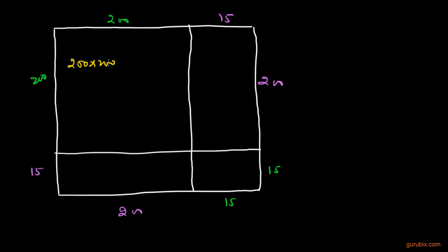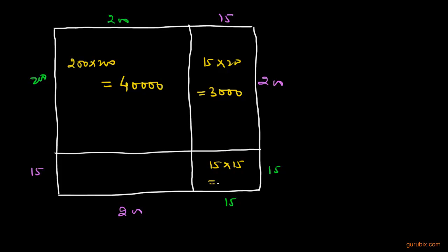Now we shall find the area of all 4 parts of the square. The area of the first part will be 200 into 200, which means 40,000. The area of the second part will be 15 into 200, which means 3,000. The area of the third part will be 15 into 15, which means 225. The area of the fourth part will be 15 into 200, which means 3,000.